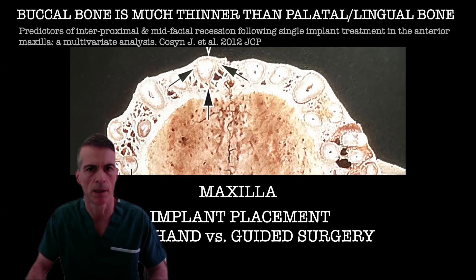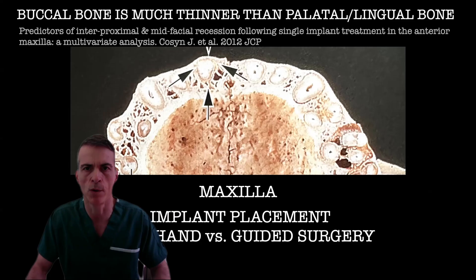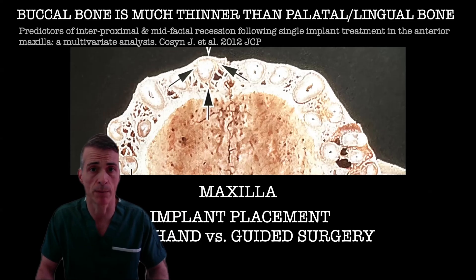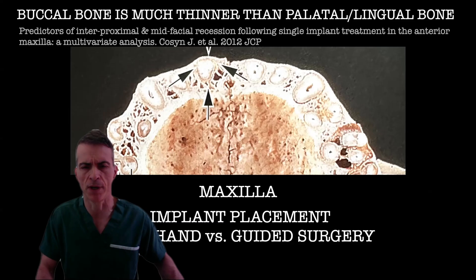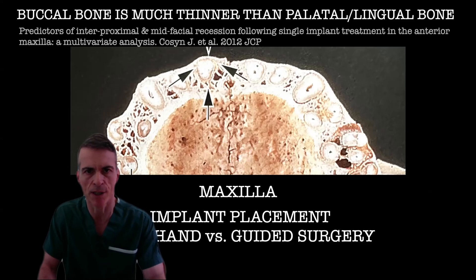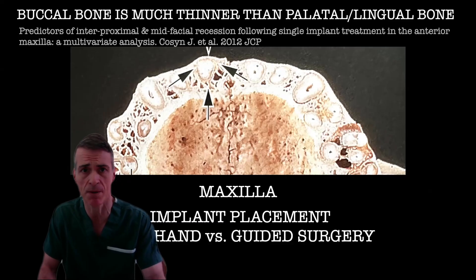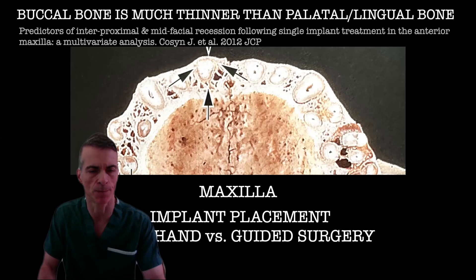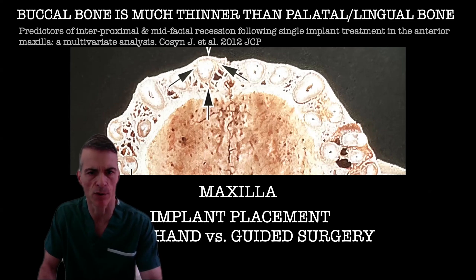When the implant is engaged in the palatal bone, which is thicker, you will be able to get better primary stability, more so when doing immediate implant placement. Research data has identified that mid-facial recessions were significantly much higher — up to 17 times higher — when the implant shoulder was placed too buccal. So always aim for the palatal for those main reasons.